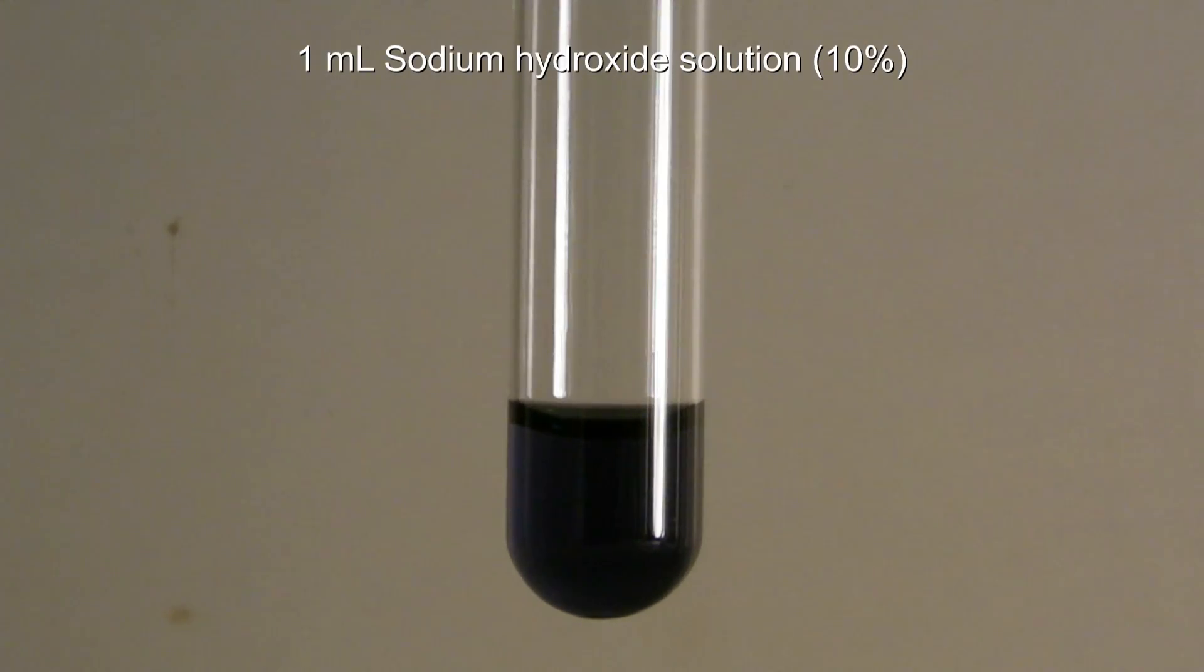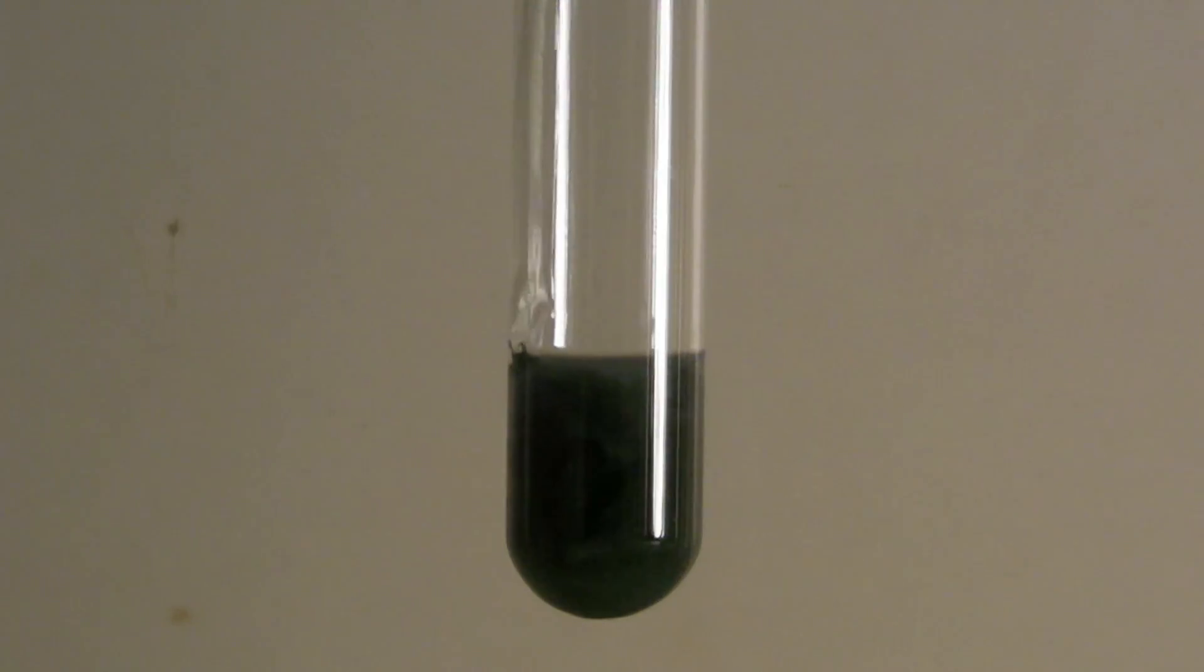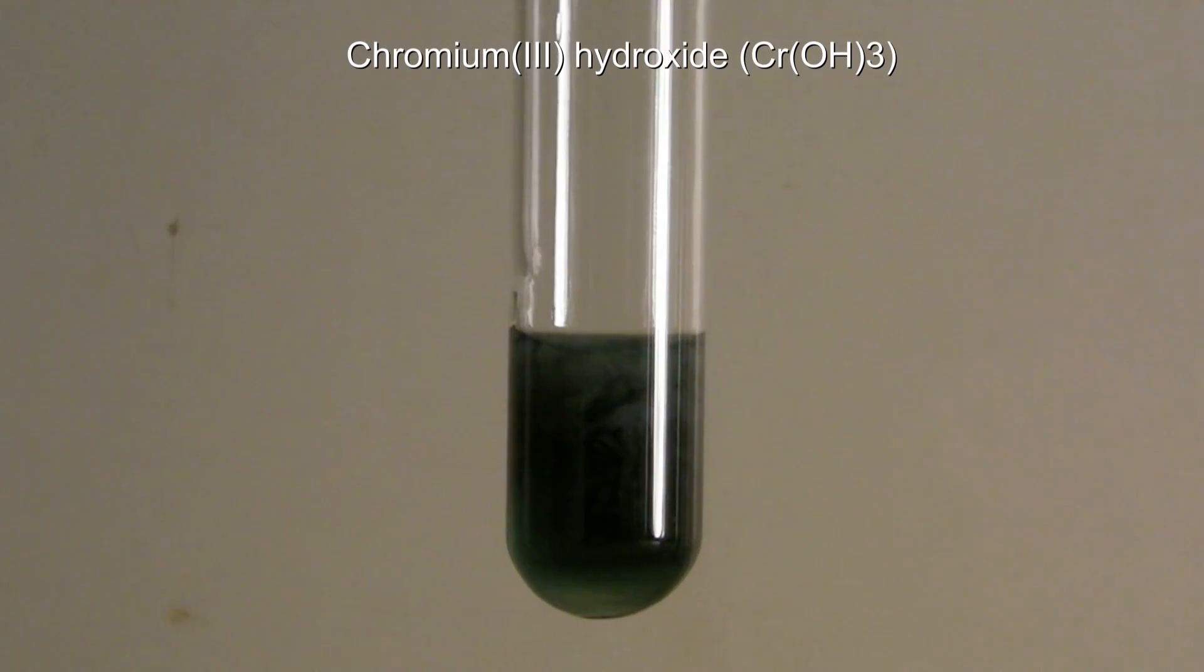Then 1 ml of 10% sodium hydroxide solution is added. At first, insoluble Chromium-3 hydroxide is formed, which then dissolves as green hexahydroxidochromate-3.